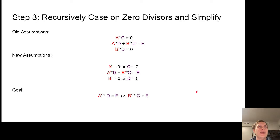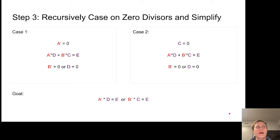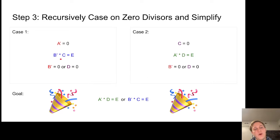Our strategy is to recursively case on these zero divisors and simplify. In any integral domain, A times C equals zero implies either A equals zero or C equals zero. We can split that up, and do a similar thing with B prime and D. Once we've done that, we split into cases. In the first case, A prime equals zero. In the second case, C equals zero. Once we have that, any instance of A prime we can replace with zero. If A prime is zero, we remove A prime from the equation entirely. Once we do that, we get much simpler expressions. We have B prime times C equals E, and A prime times D equals E. No matter which case we're in, we can prove the goal.